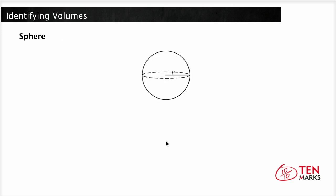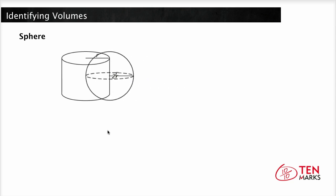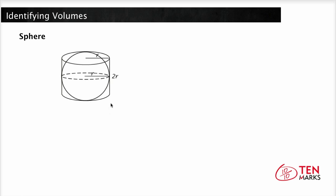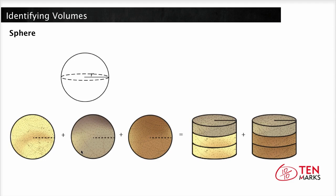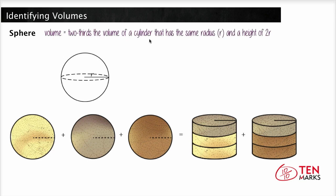Now let's turn to spheres. Compare a sphere to a cylinder: if you trap a sphere in a cylinder so that the sphere fits exactly, the radius of the sphere and the radius of the cylinder's base are the same, and the height of the sphere is 2 times the radius. In the pictures below, you can see that if you filled the spheres with sand, it would take 3 spheres to fill 2 cylinders. In other words, one sphere fills 2 thirds of a cylinder with those dimensions.